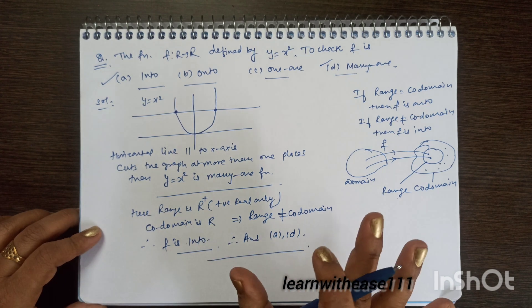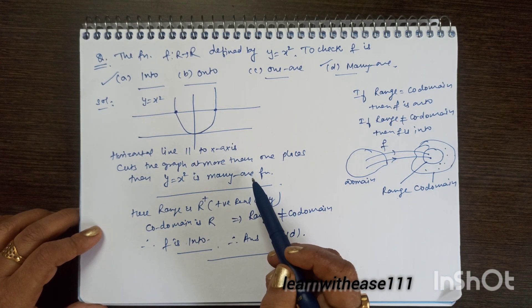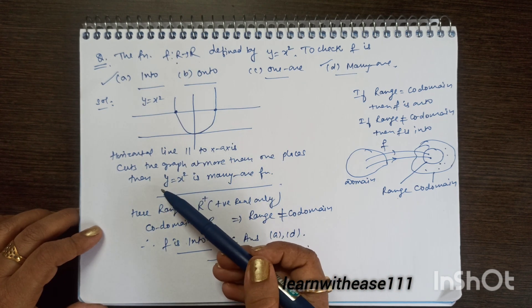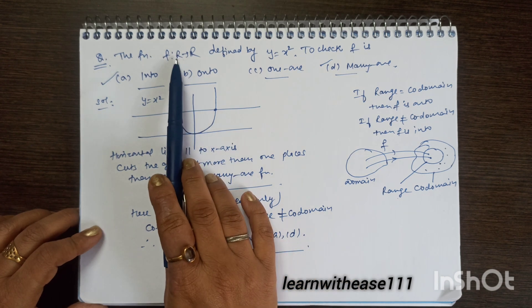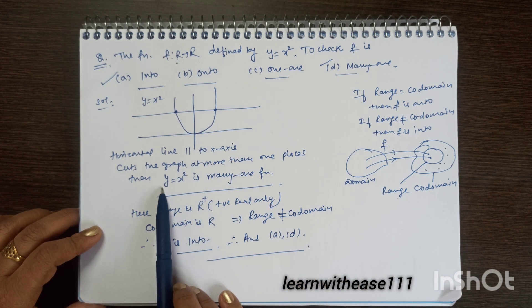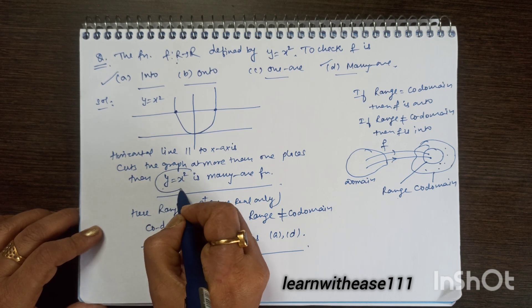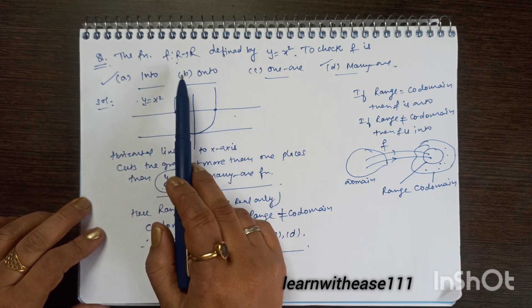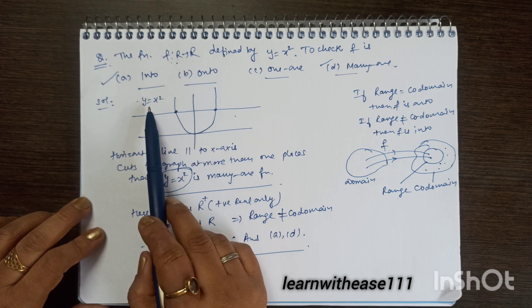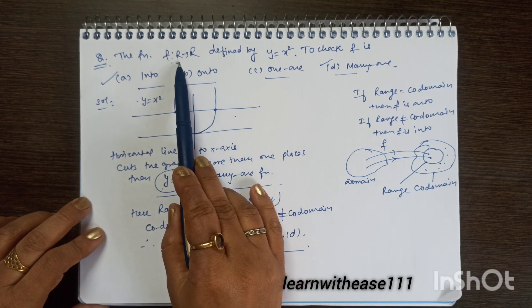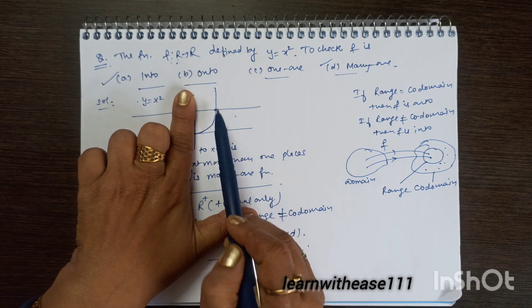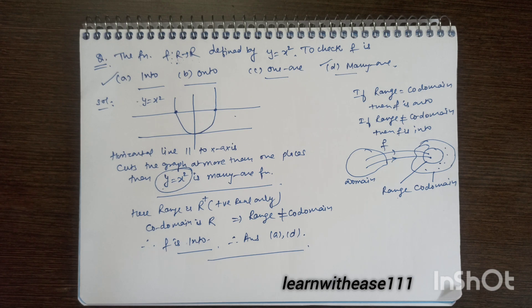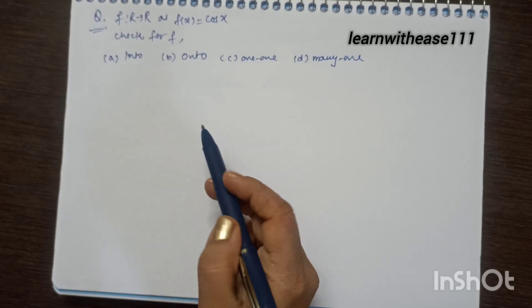One-one and many-one also depend on the domain. The domain here is the whole real numbers. If we restrict the domain to positive reals, we don't allow negative x values. In that case, only the first quadrant graph is available, and the function y = x² becomes one-one. So one-one or many-one depends upon the domain.